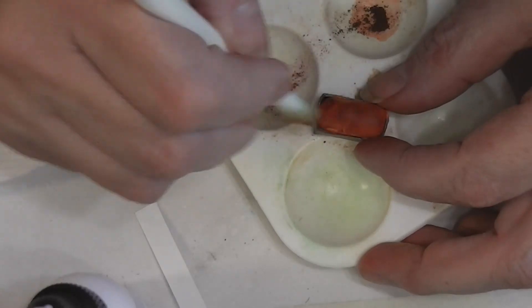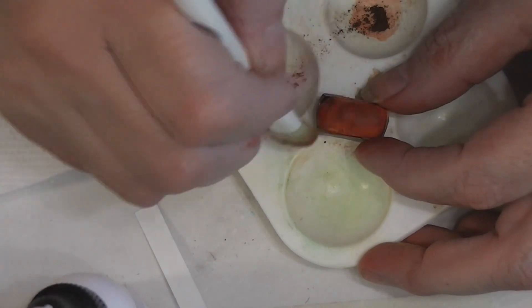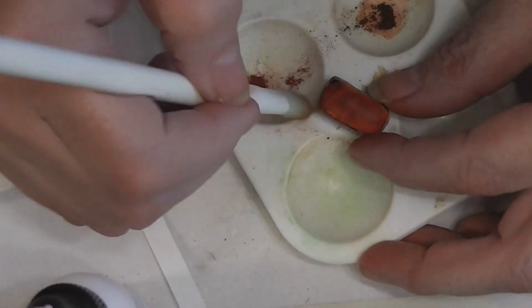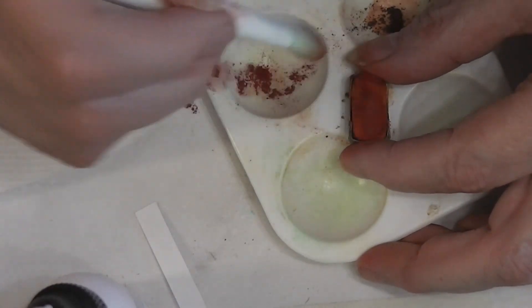If you go too heavy with that dark brown, it's going to look like Mrs. Doll burnt the bread. Which, you know, depending on the story you're telling in your dollhouse, that may be exactly what you want to do.